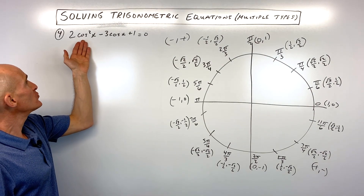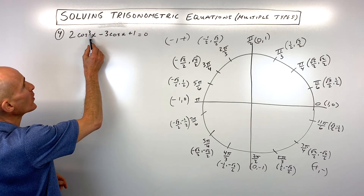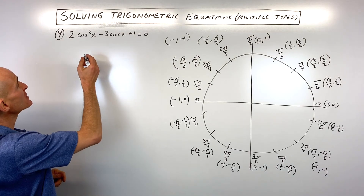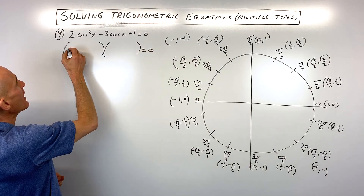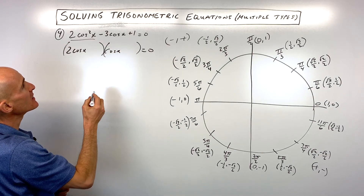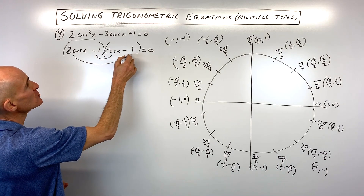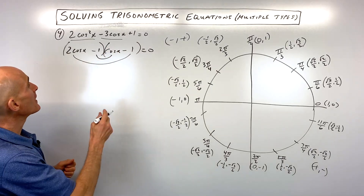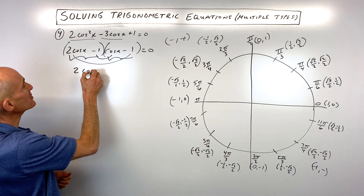Number 4: 2cos²(x) - 3cos(x) + 1 = 0. This has a squared term as well as a cosine-to-the-first term, so I'm going to factor it into two binomials. We get (2cos(x) - 1)(cos(x) - 1) = 0: 2cos(x)·cos(x) gives 2cos²(x), the cross terms -cos(x) - 2cos(x) add to -3cos(x), and (-1)(-1) = 1.